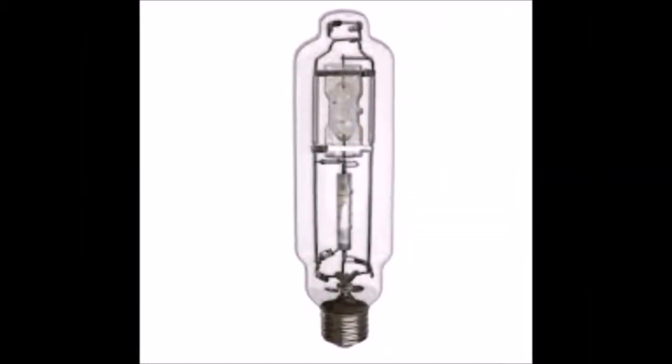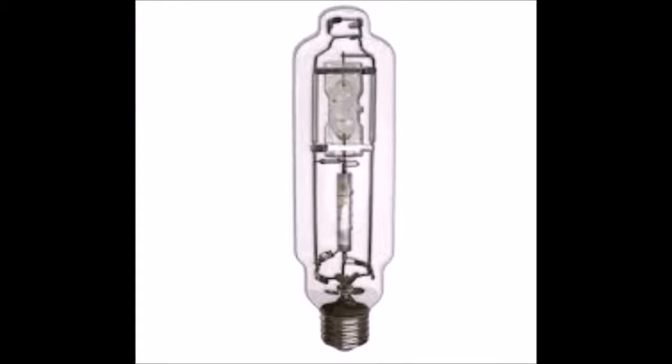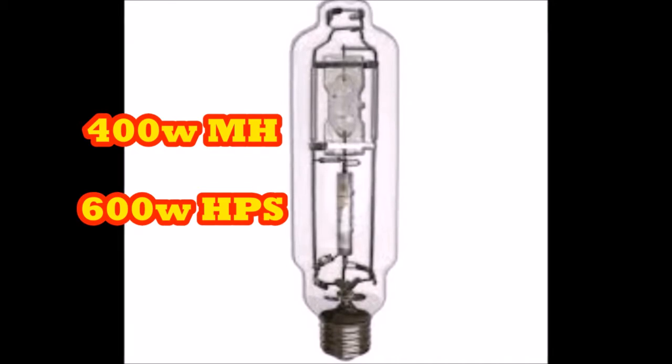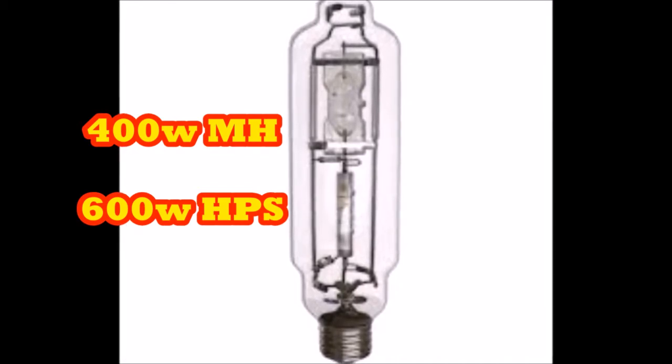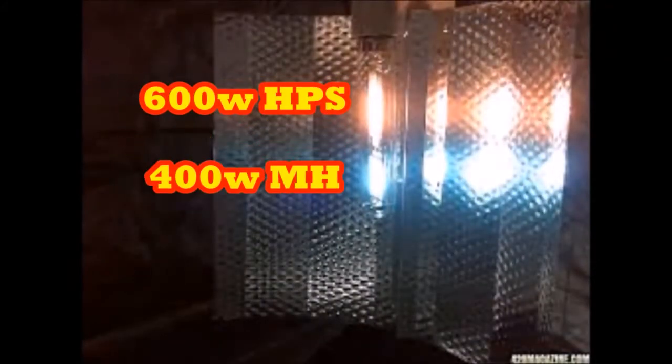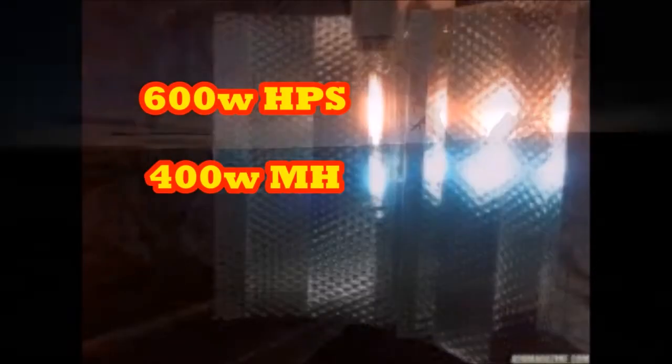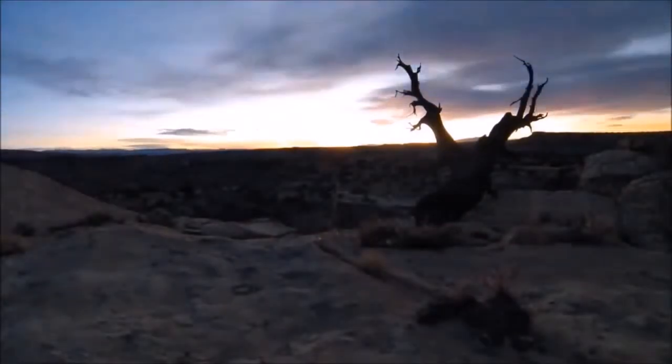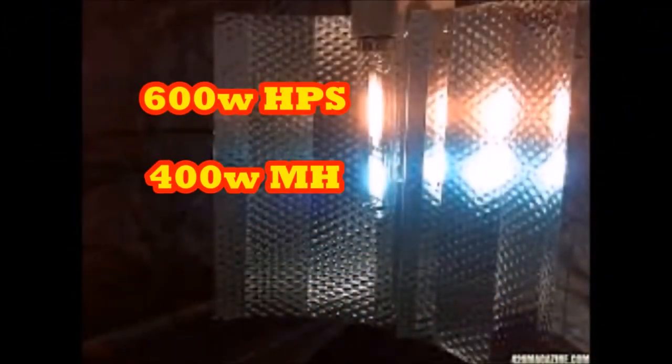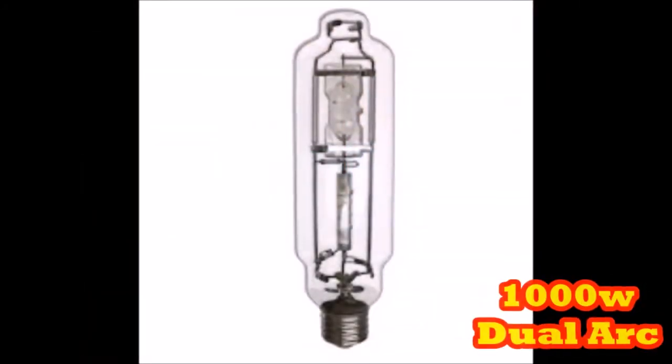But if you look more closely at what's inside of it, you'll notice the dual arc combines a 400 watt metal halide and a 600 watt high pressure sodium bulb all into one 1,000 watt bulb. Which, if anything was ever going to mimic the winter sun with six hours of red and two hours of blue, you'd think it would be a bulb with something pretty close to the same ratio, right? 600 watts red, 400 watts blue. Perfect. The dual arc is just like a winter sun if you're good.